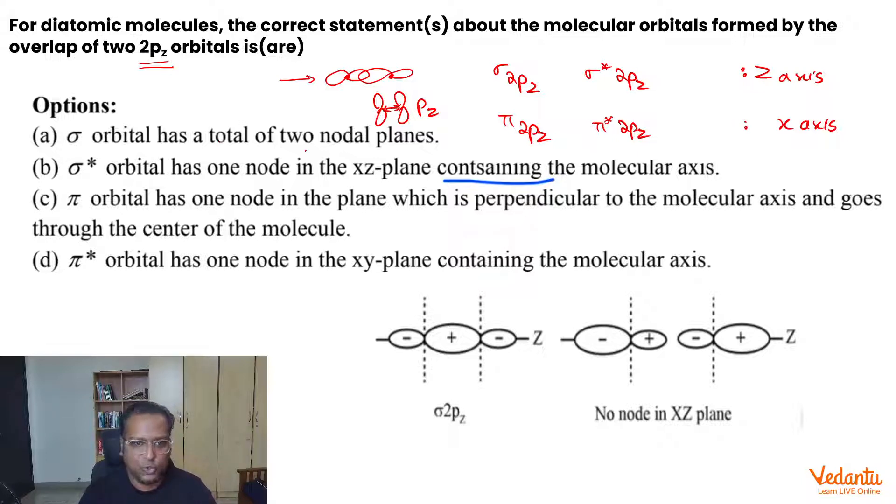Sigma orbital has a total of 2 nodal planes. When we make a sigma bonding orbital, we get this diagram. Due to increased electron density, there are 2 nodal planes passing through 2 nuclei. Mind you, these are atomic nodal planes, not molecular nodal planes. What is the difference? This nodal plane belongs to an individual atom. When we say molecular nodal plane, it should either pass through both nuclei or none of the nuclei. So sigma 2px has a total of 2 atomic nodal planes.